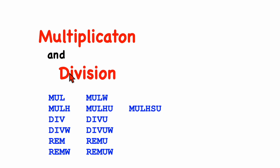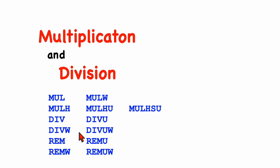That concludes my discussion of the multiply and divide instructions. For multiply, we have the basic instruction to produce the lower half of the result, and then three different instructions to produce the upper half depending on whether the operands are signed, unsigned, or one of each. For 64-bit machines, we also have an instruction that just does 32-bit multiplication. For divide, we have both the divide and remainder instructions with versions for signed and unsigned. For 64-bit machines, we also have a variation that performs the divide operation using only 32 bits, producing a 32-bit result, both as signed and unsigned values. Thanks for watching, and I'll see you in the next video.